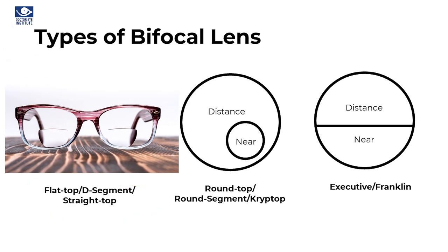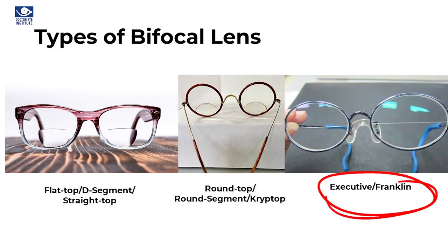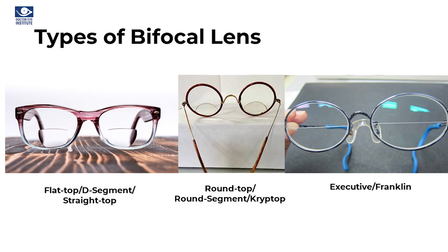Let's look at another example, the clip top bifocal. The third type of bifocal is called the executive bifocal. You will see a line running across that divides the distance vision and the near vision. The advantage of the executive bifocal is that you get a larger area of reading. However, many patients find it difficult to walk with an executive bifocal because it comes in the way when you look down and walk.